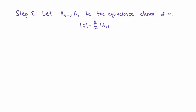For the second step of the proof, let A1 through Ak be the distinct equivalence classes for this equivalence relation. From our video on equivalence relations, we know that the equivalence classes partition the set — they are pairwise disjoint and their union is the whole set. Because G is a finite group, the cardinality of G is the sum of the cardinalities of each equivalence class. What we'd like to show is that all these equivalence classes have the same cardinality, equal to the cardinality of the subgroup H.